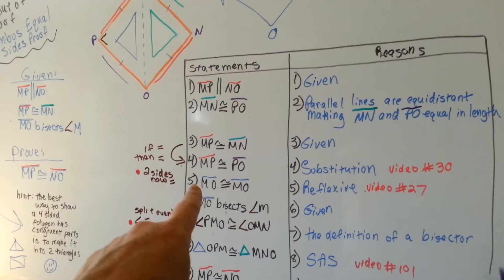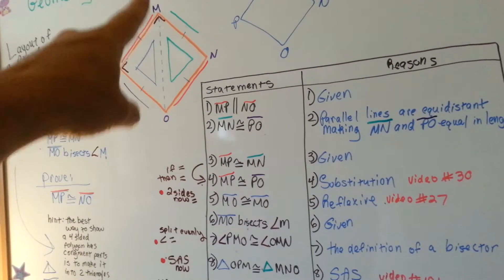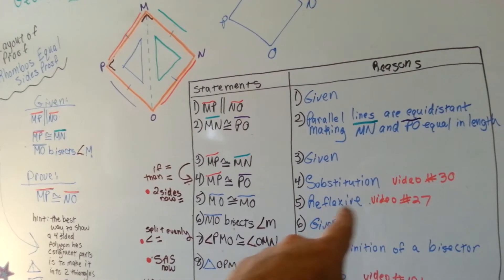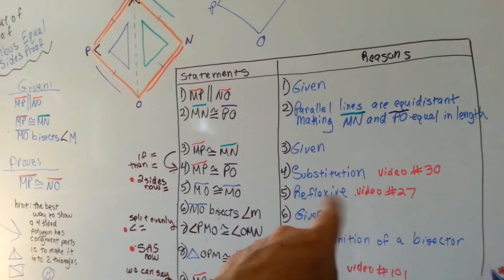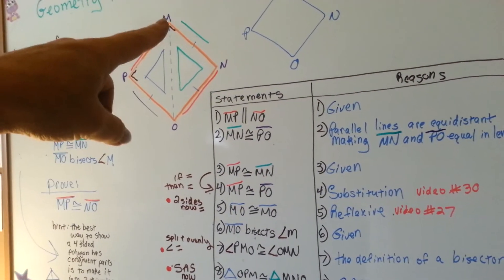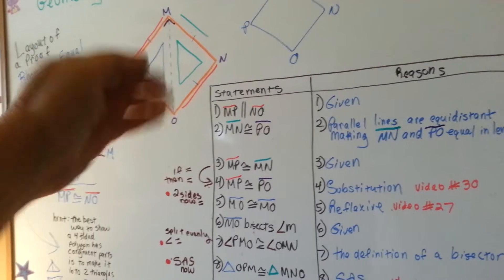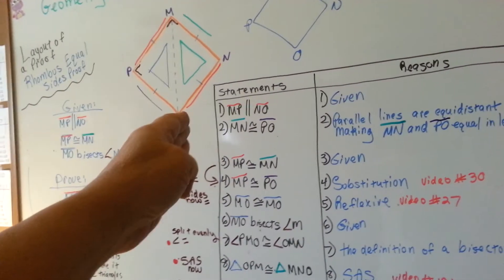So now we can say that MO, this bisecting line, is congruent to itself and that's the reflexive property. That's in video 27 if you don't know what that is. It's identity property, reflexive property of congruence. It's saying that we have two triangles and they're sharing this side, so it's congruent to itself. So we've proven that a side is congruent.